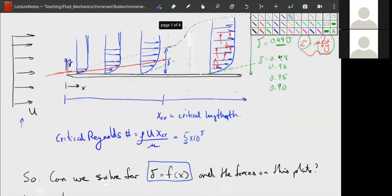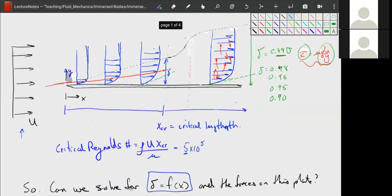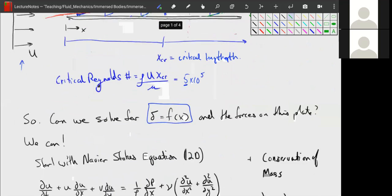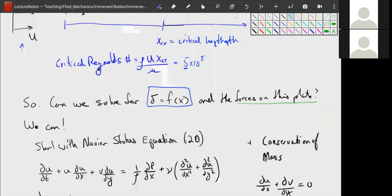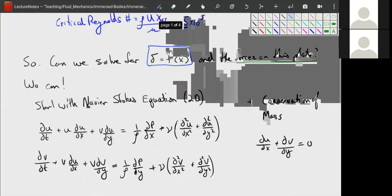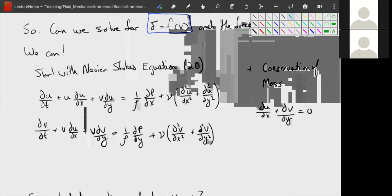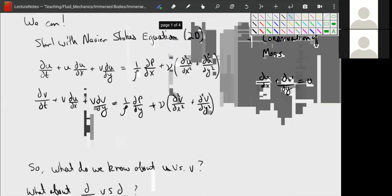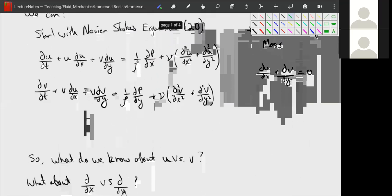So one of our goals is to determine the thickness of this boundary layer and we want to be able to solve for the forces on a plate. Because ultimately, right, in order for this stuff to be useful, we have to be able to predict the behavior of physical systems. And a lot of times what we care about is drag, but drag with a flat plate like this. So we can always start with Navier-Stokes equation in 2D in this case, with conservation of mass, and we can simplify it.